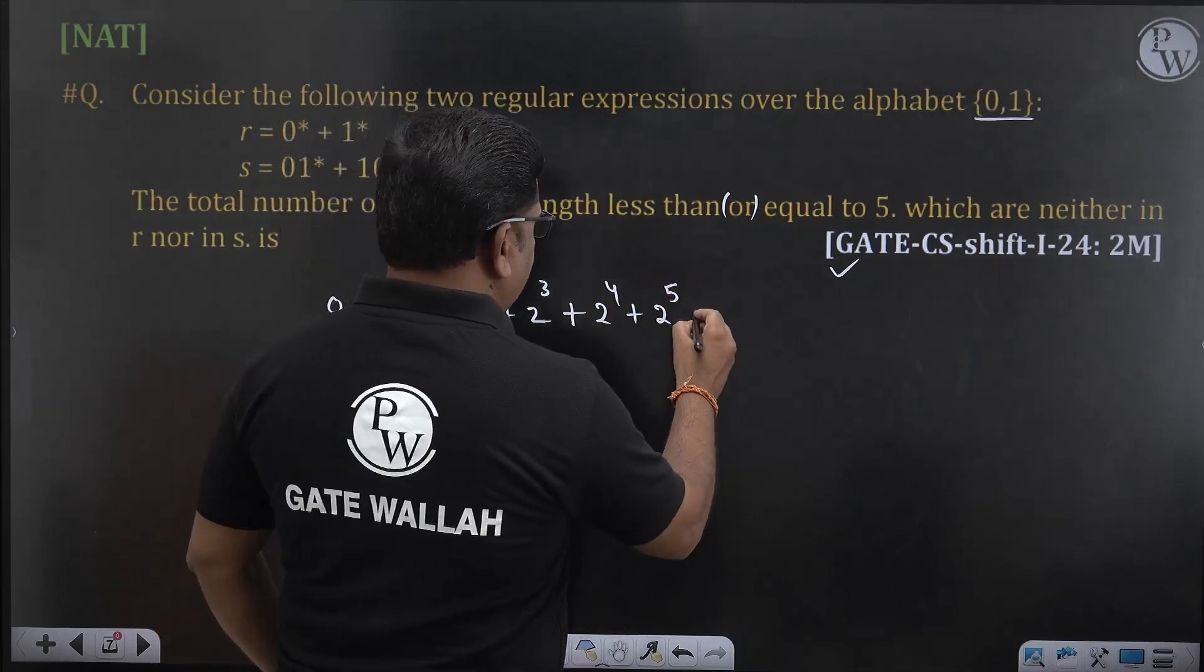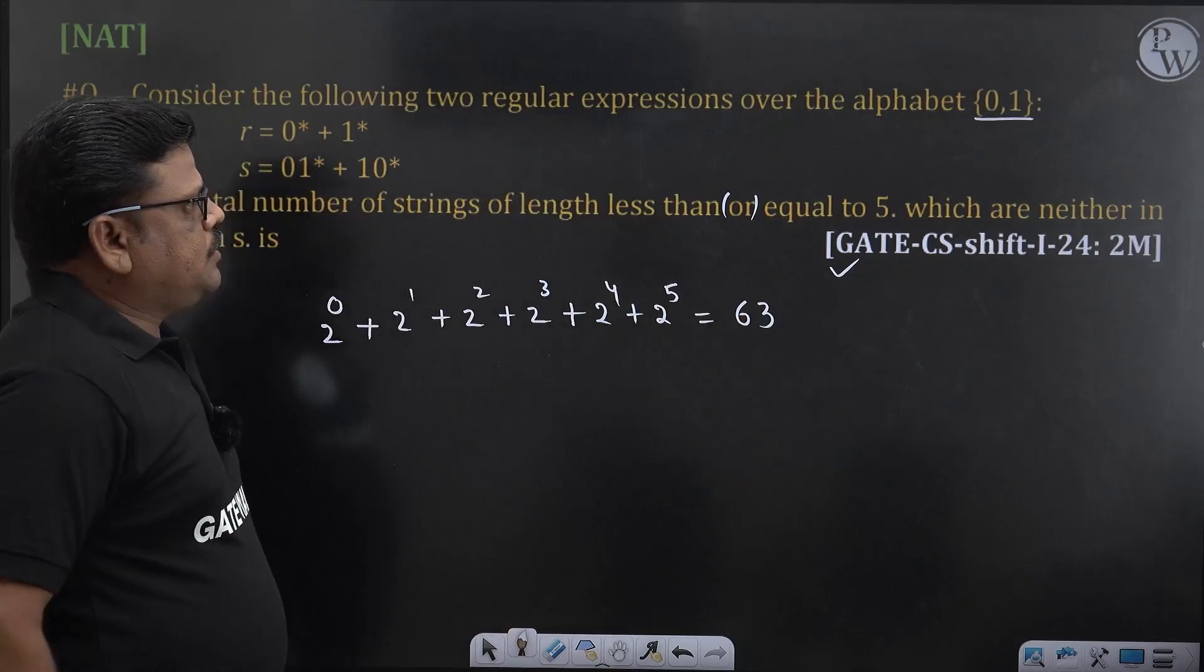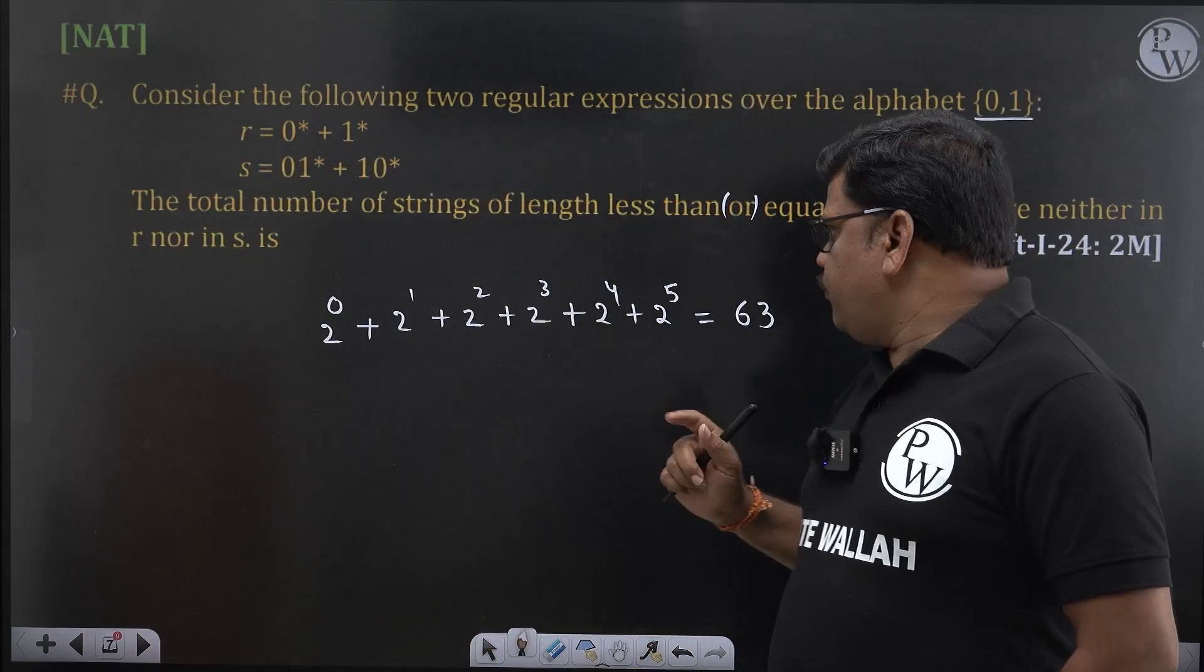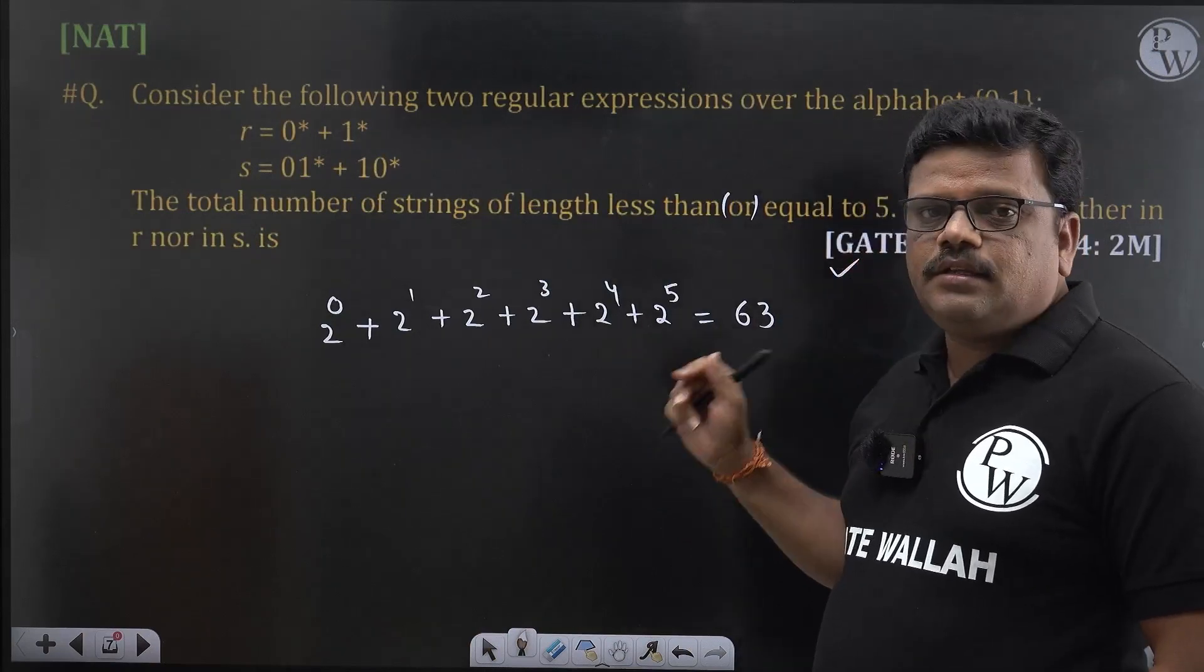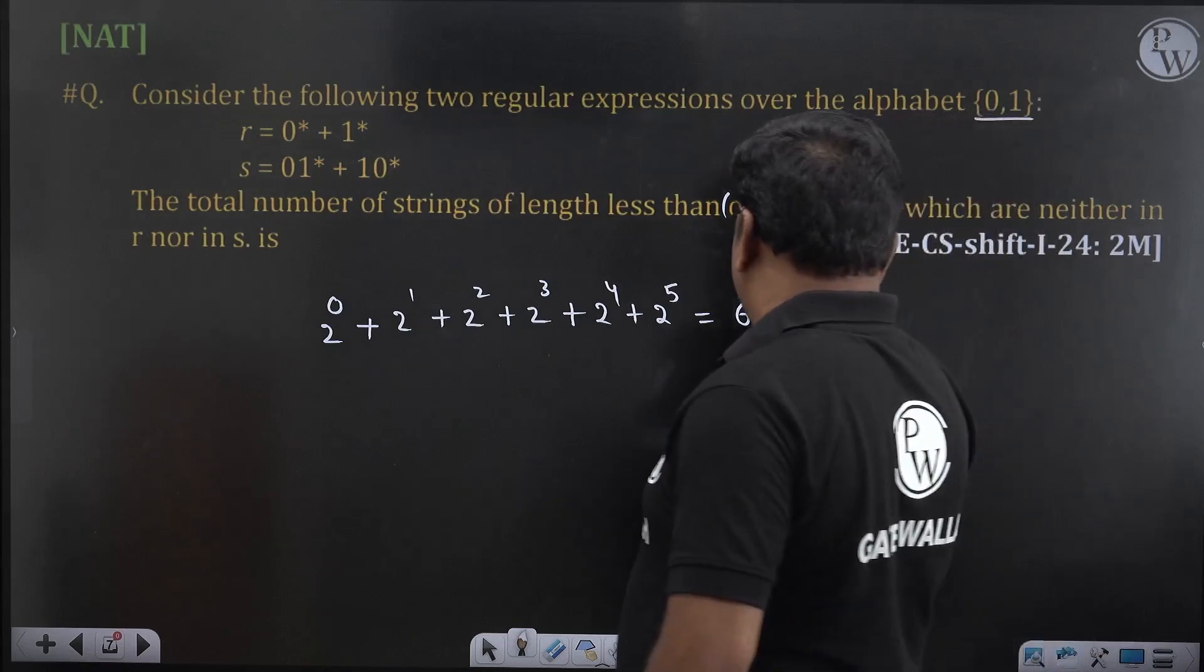Total value of this will be 63. Over 2 symbols, sum of all 0 length, 1 length, 2 length, 3 length, 4 length, 5 length, if I count that is 63 here.